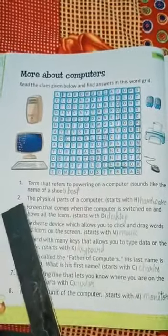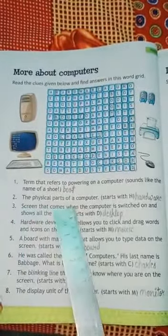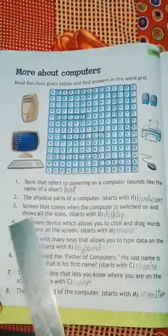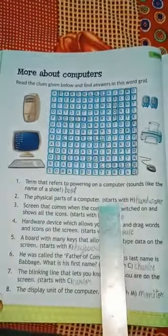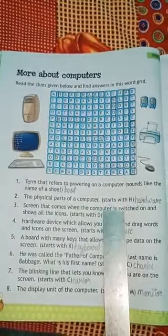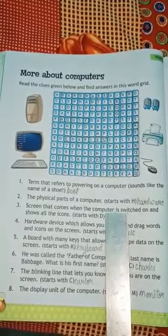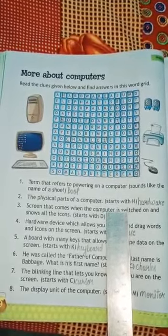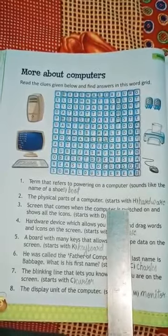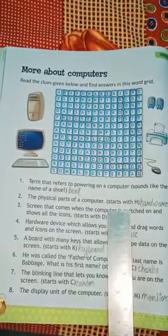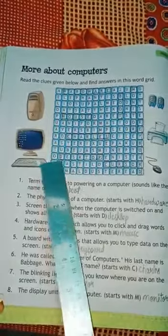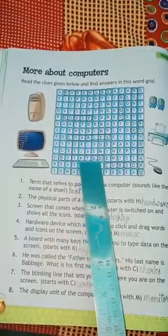Next, screen that comes when the computer is switched on and shows all the icons start with D. Computer ki wo screen, jab hum switched on karte hai, jo sare icons ko show kerti hai, D se start hoti hai. What is this? Desktop. Yes. D-E-S-K-T-O-P. Desktop.